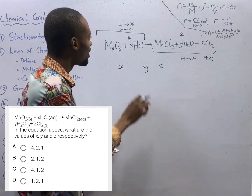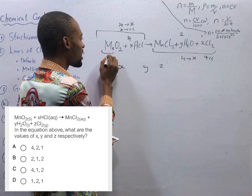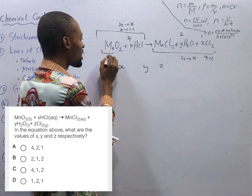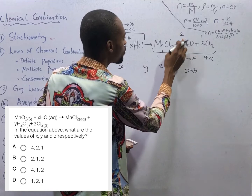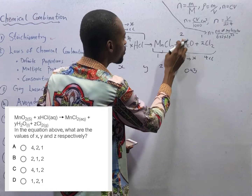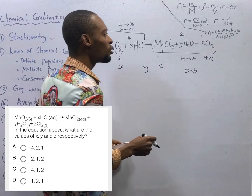It is actually correct. If here is 4, here is 2 and here is 1. Manganese in the reactant side is 1; in the product side, 1. Oxygen in the reactant side is 2; in the product side, oxygen will also be 2. Hydrogen in the reactant side: 4. In the product side, hydrogen is 2 times 2 = 4. Chlorine in the reactant side will be 4. In the product side, there is already 2 here; if we put 1 here, 1 times 2 is 2, that is 4. It is balanced. So option A is the correct option.